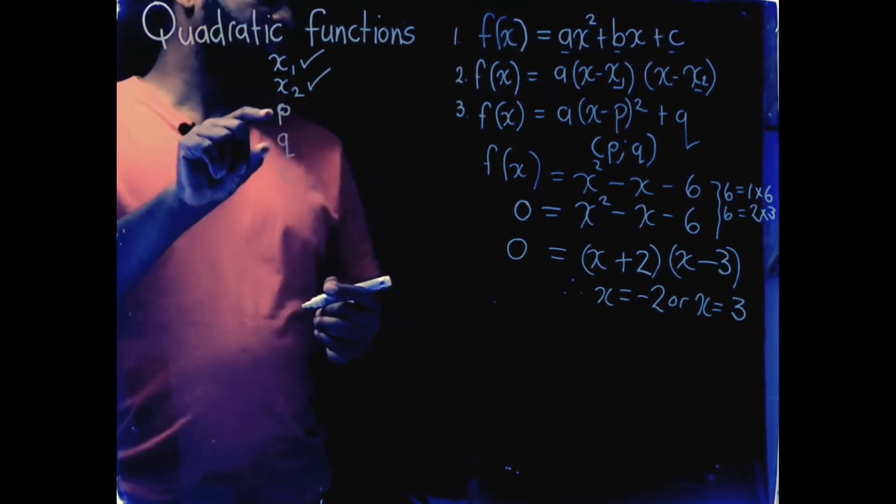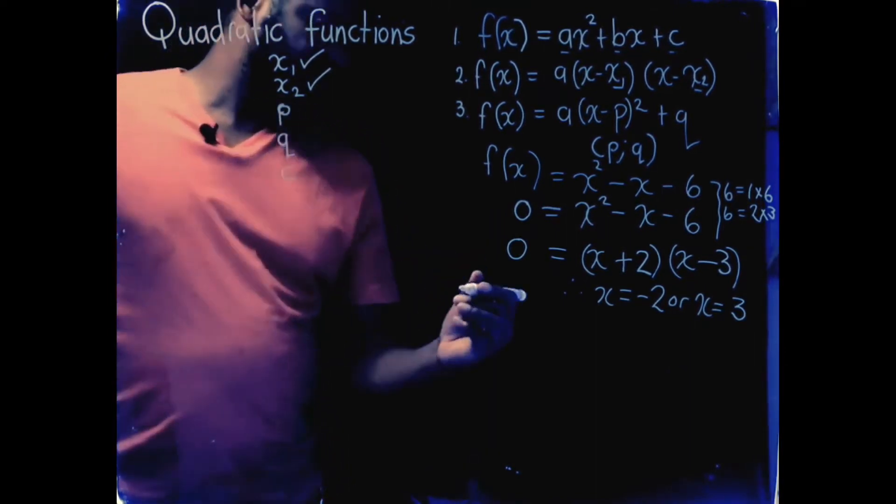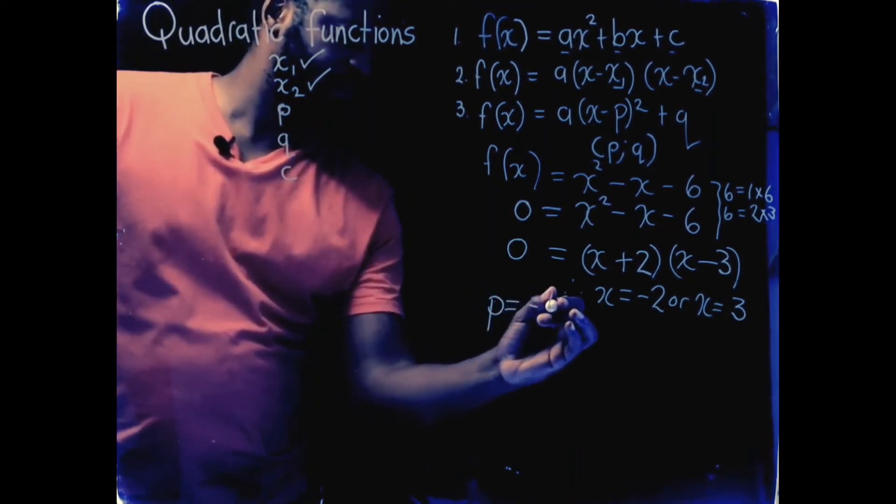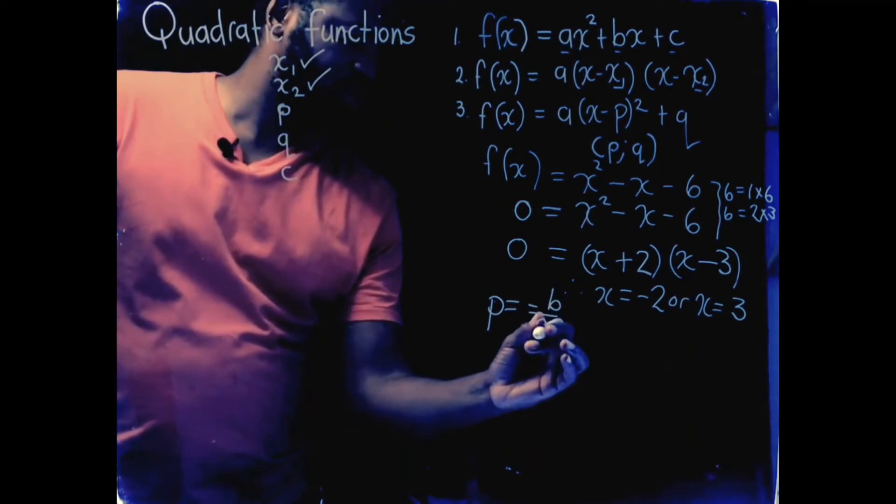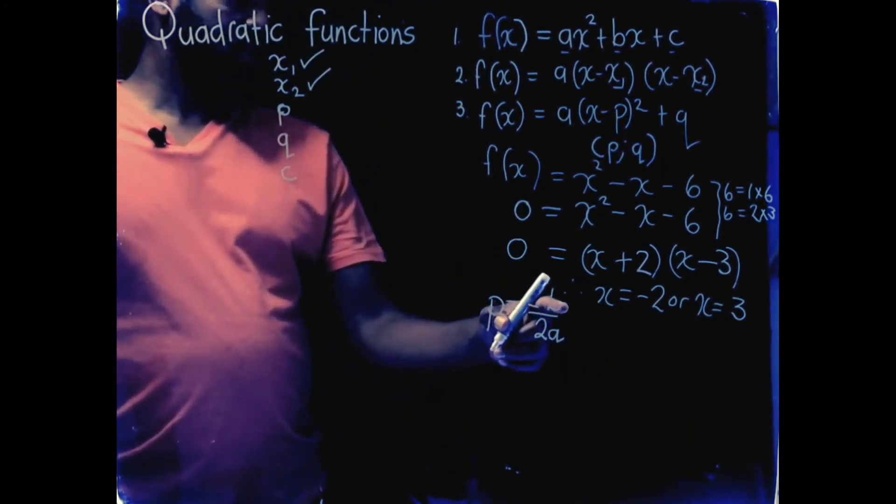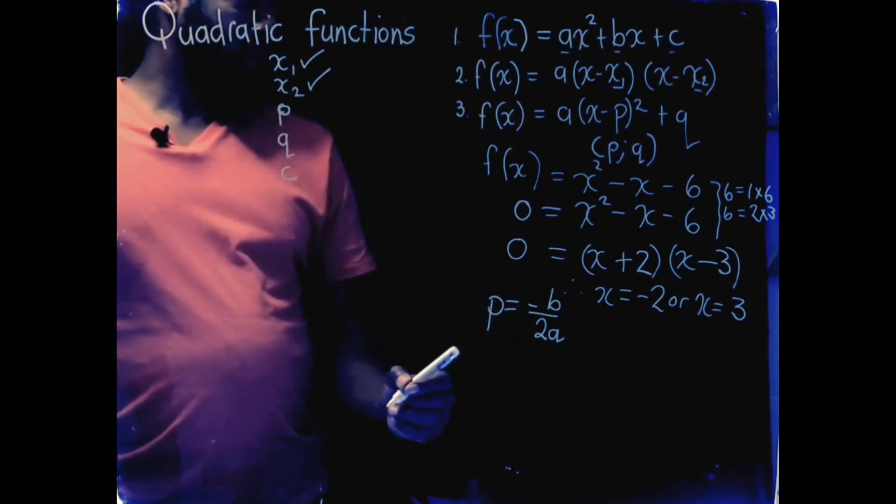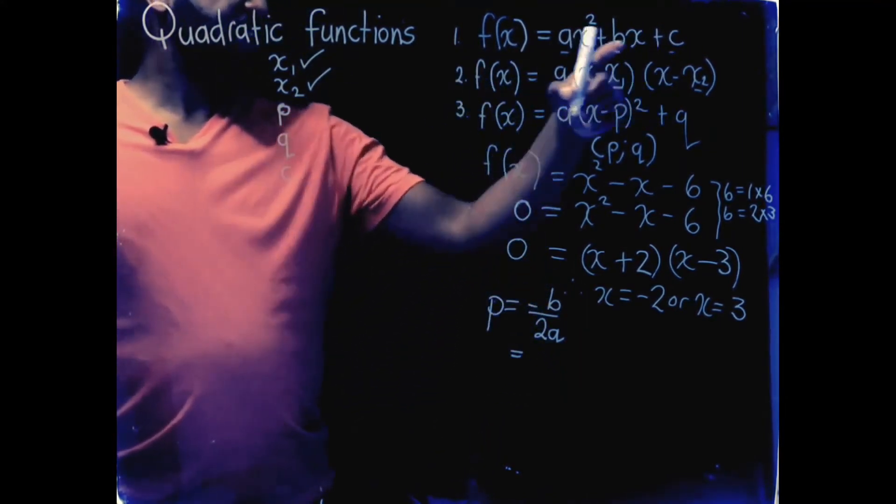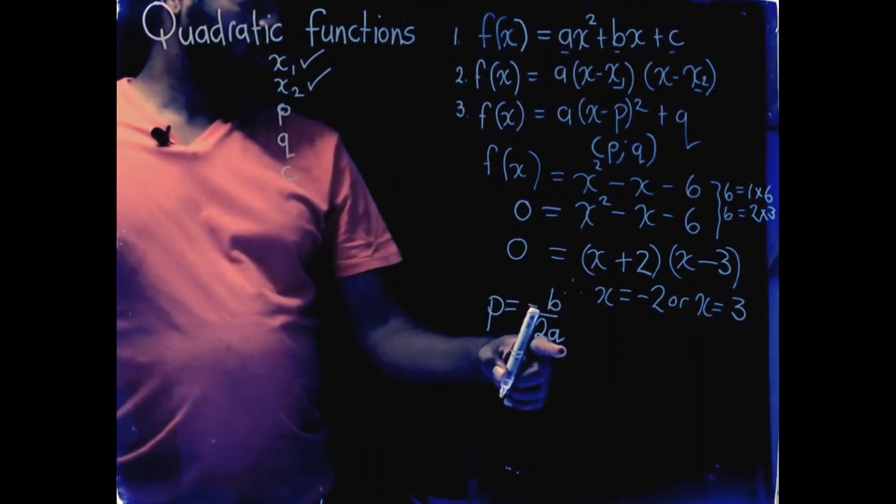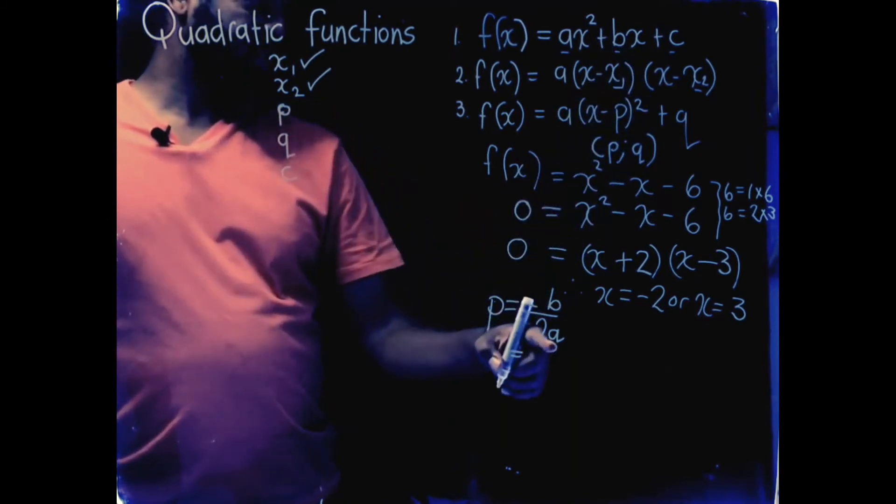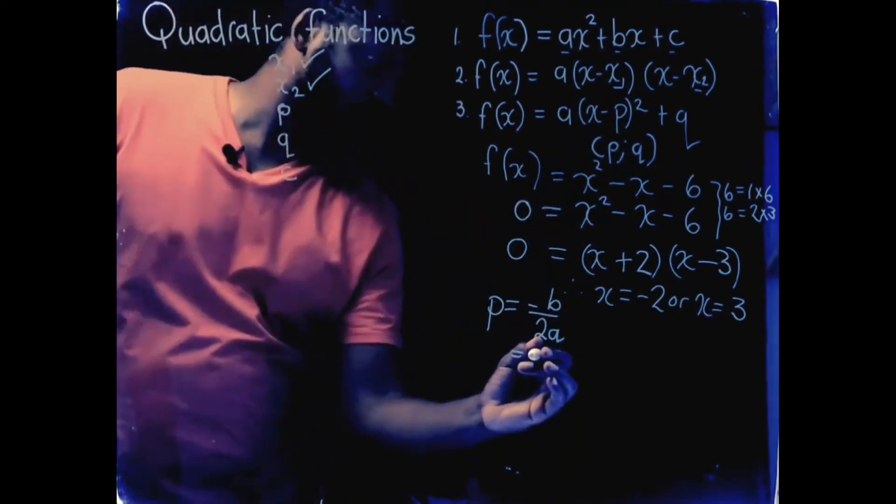The next thing I need to get is p and q. I can easily get the value of p by using this formula minus b over 2a. So, the axis of symmetry is always equal to minus b over 2a. Now, I need the equation to be in that format so I can see the b and the a value. My function is already in that format so I can easily see what b and what a is.